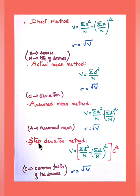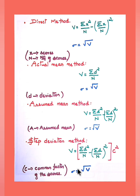The fourth method is the step deviation method. The formula is the same as the assumed mean method, multiplied by c-squared, where c is the common factor of the scores. Standard deviation sigma is the square root of v. Remember this formula.